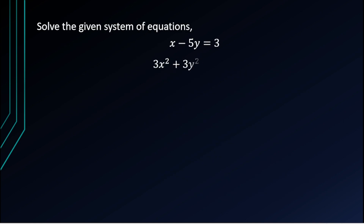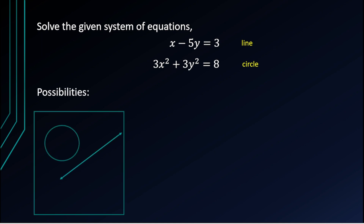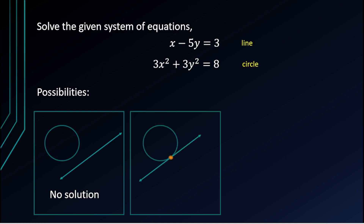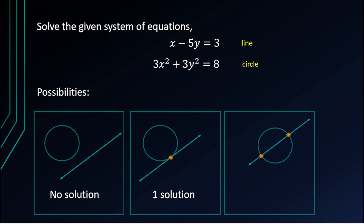For our example, solve the system: x − 5y = 3 and 3x² + 3y² = 8. The first equation is a line since all terms are degree one. The second is a circle since it has both x² and y² terms with equal coefficients. There could be no intersection, one intersection (tangent), or two intersections.